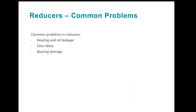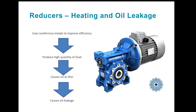Let's take a look at some common problems in reducers. There are three: heating and oil leakage, gear wear, and bearing damage. To improve efficiency, some reducers — in particular worm gear reducers — use non-ferrous metals. Due to sliding friction, this can cause high quantities of heat, which can cause the oil to thin, thereby causing leakage. This is where the oil you choose comes into play. A hotter operating temperature requires lubricants with higher viscosity numbers, because as the oil warms, its ability to resist flow decreases.